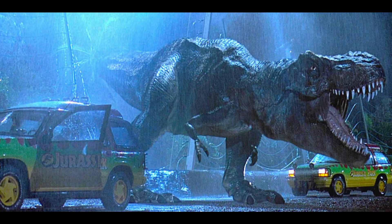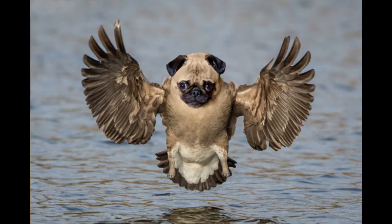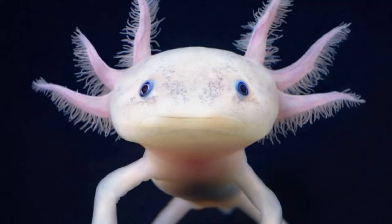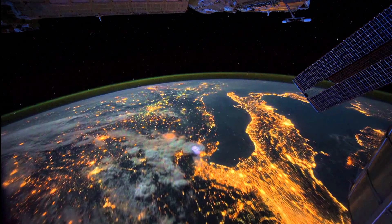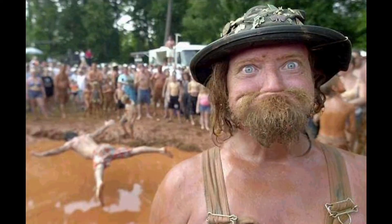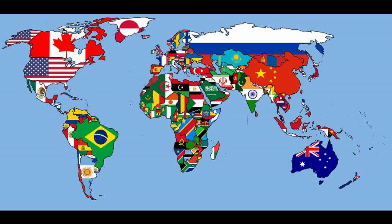Over 99% of all species that ever lived on Earth are now extinct. Estimates of the number of species on Earth today vary wildly and most species have not even been described. Currently, in 2017, we have around 7.4 billion humans on this planet and we all depend on its biosphere and minerals for our survival. Humans — us — have developed diverse societies and cultures, and politically, the world has about 200 sovereign states.